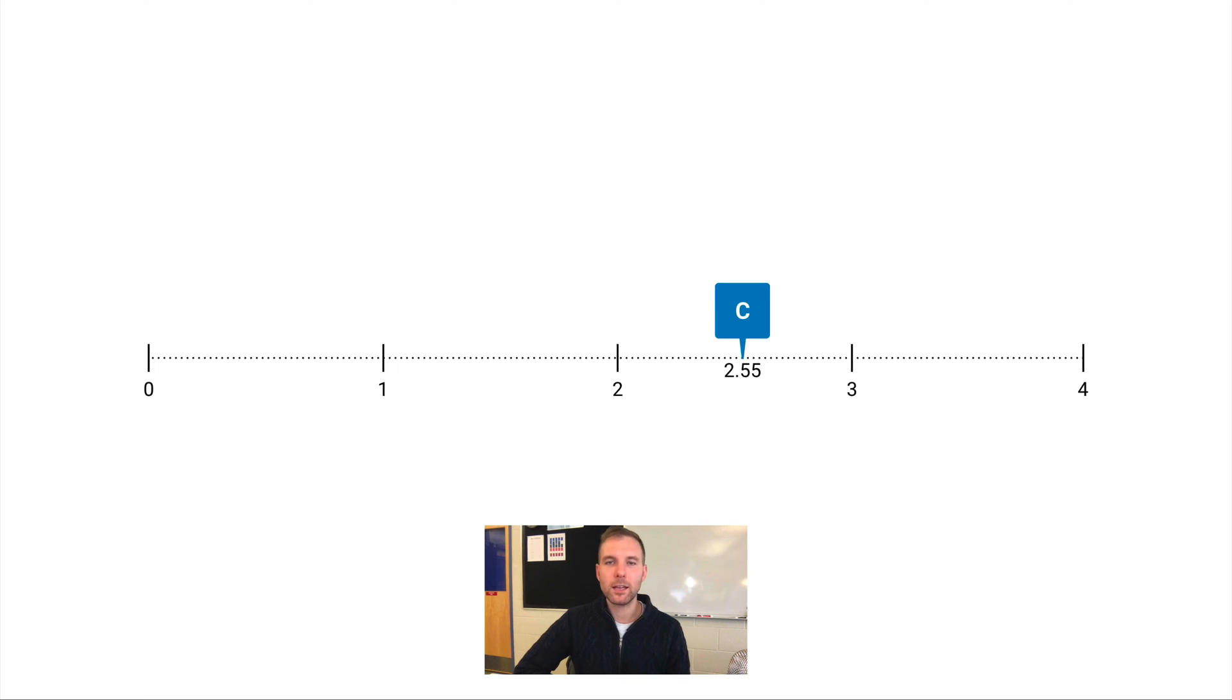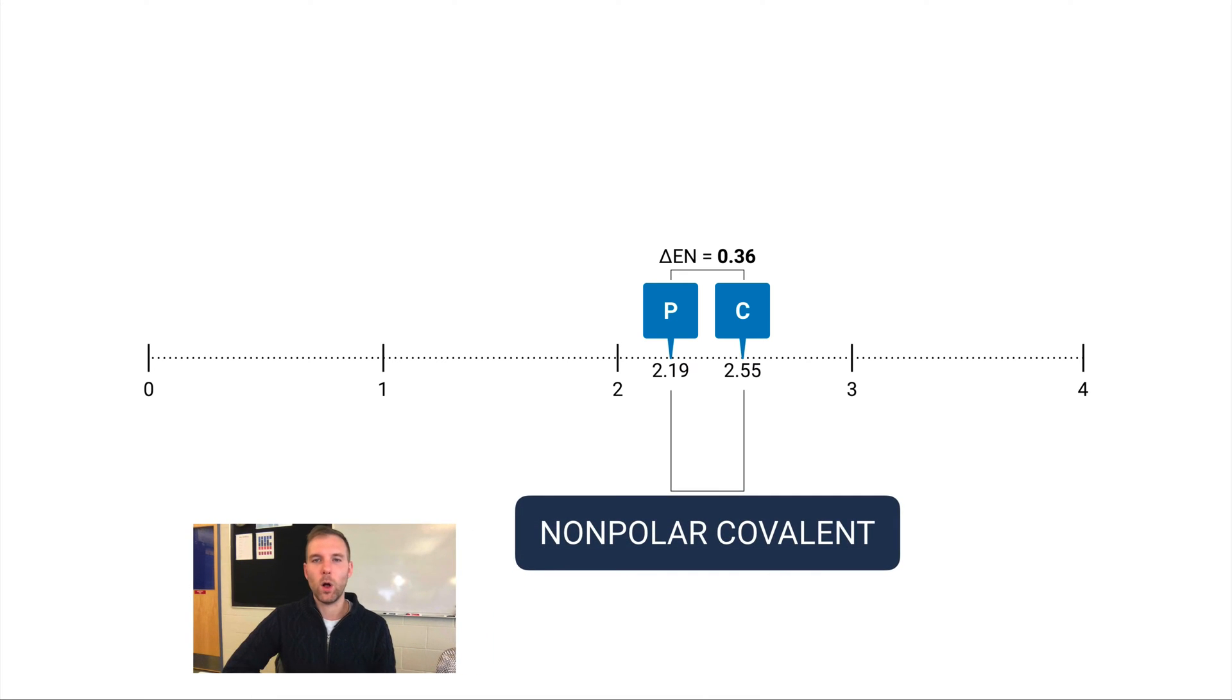Let's say I had a bond between carbon and phosphorus. Phosphorus has a somewhat similar electronegativity, 2.19. The difference in these, I just subtract to find the difference, would be 0.36. Now that's a pretty small difference between the amount that these two different types of elements want electrons. When the difference is this small, we call this type of bond a non-polar covalent bond.